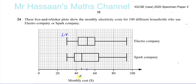Then you have the highest cost, which is the line on the furthest right, which again is the same for both of them. It looks like that's about 94. So the lowest and the highest cost was the same for both companies.